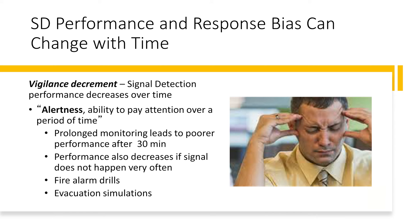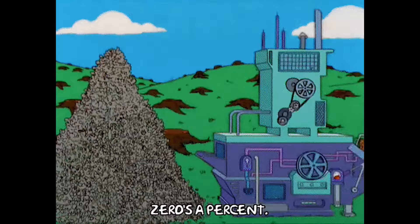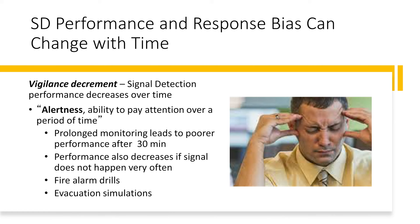Signal detection performance and response bias can change with time — not only between individuals, but also within a single person over time. As we age, our discriminability decreases as our hearing and vision decline. Over shorter periods of time, we may experience changes in our signal detection performance. Vigilance decrement is when signal detection performance decreases as you perform a task — your discriminability decreases as the work becomes more automatic and you're no longer paying as much attention. Alertness is the ability to pay attention over a period of time, and prolonged monitoring leads to poorer performance after about 30 minutes, so for optimal performance we should be taking a break every 30 minutes. Even a one-minute break helps us regain our focus. Signal detection performance also decreases if a signal doesn't happen very often — think of a fire alarm drill or evacuation simulations. Signal detection performance can also change over time due to training, fatigue, or environmental conditions.